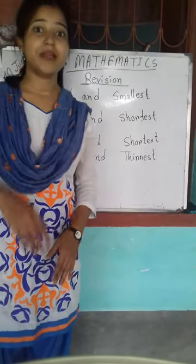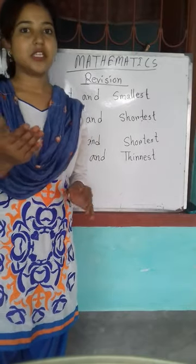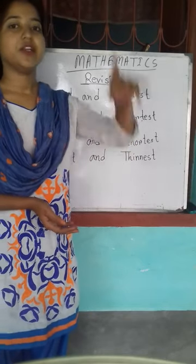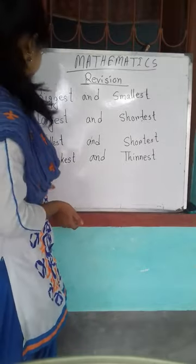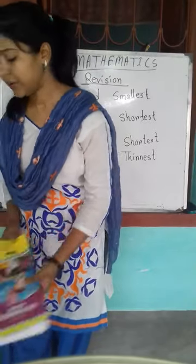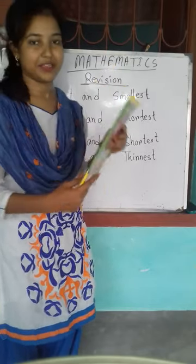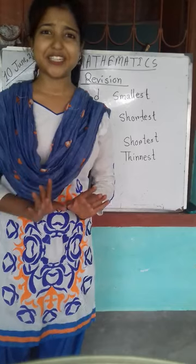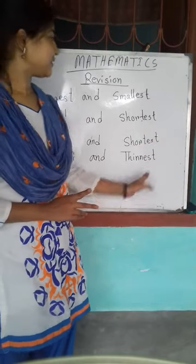For tallest and shortest, we measure the height. For that, suppose you have three trees in your garden — among these three trees, which is the tallest and which is the shortest, you can see and measure that. Thickest and thinnest is about width, not length. This side part is called width, so when we are measuring width, we use thickest and thinnest. If you didn't understand anything or have difficulty in understanding any chapter among these, you can ask me questions.